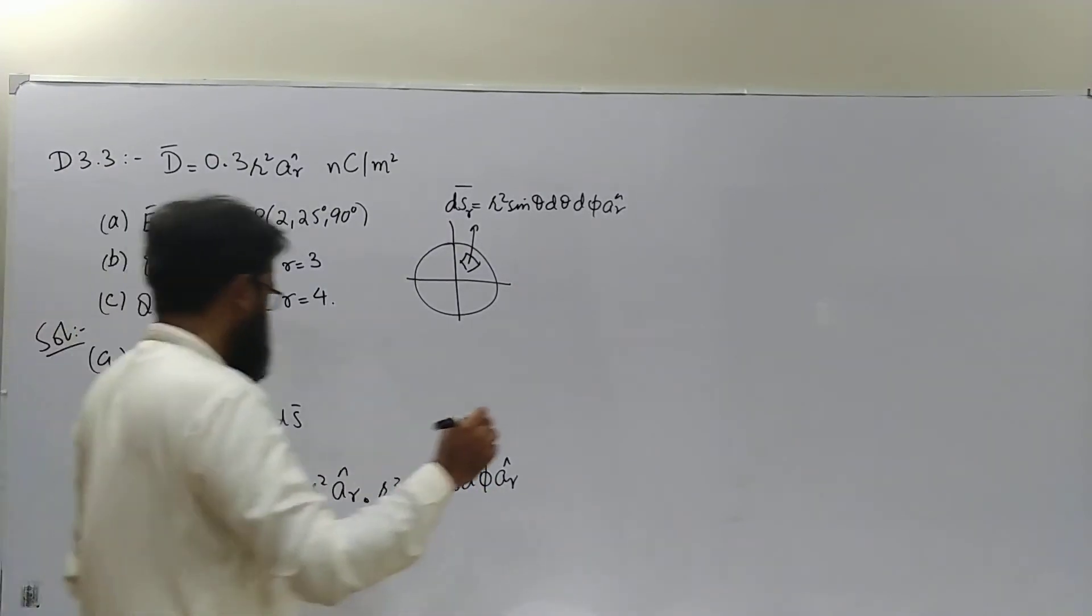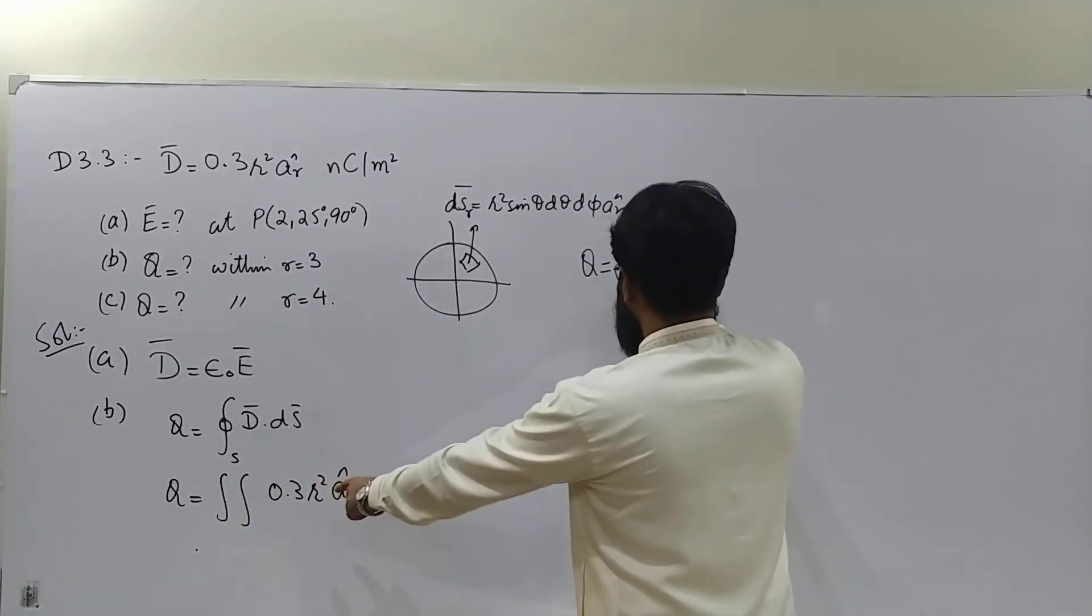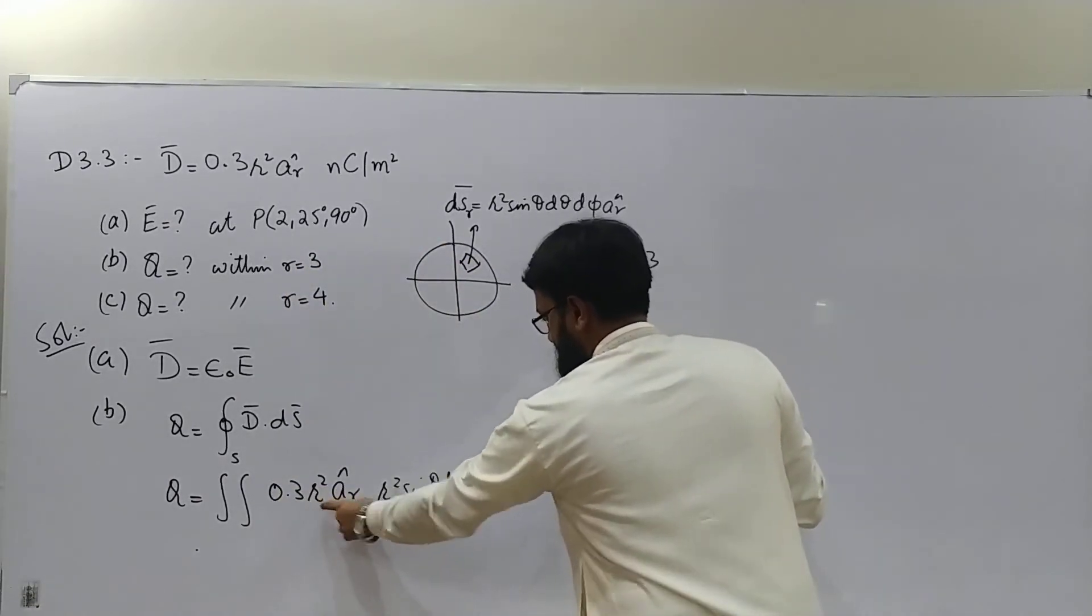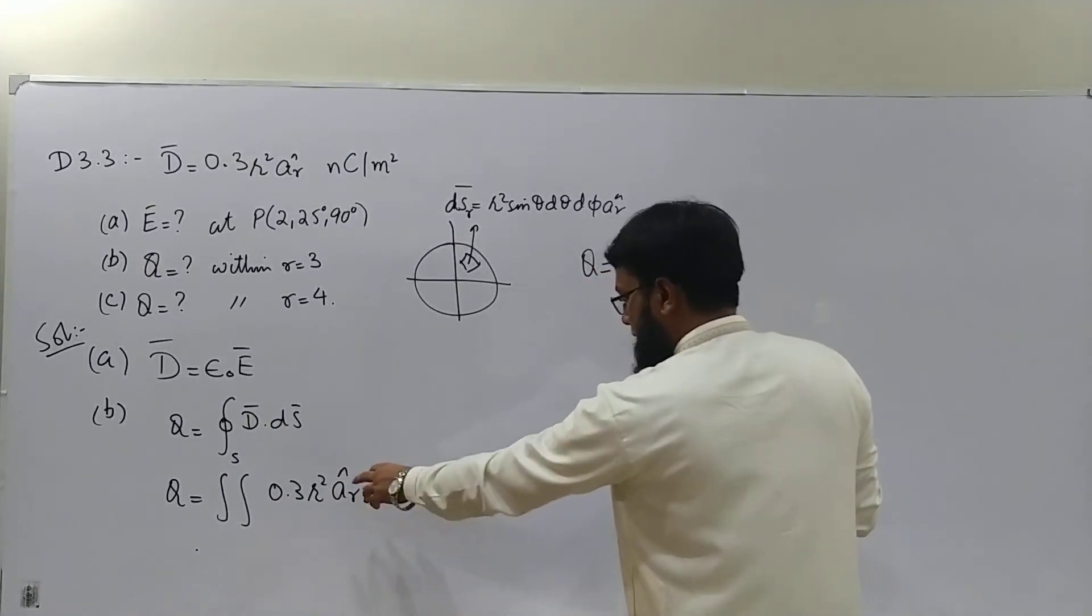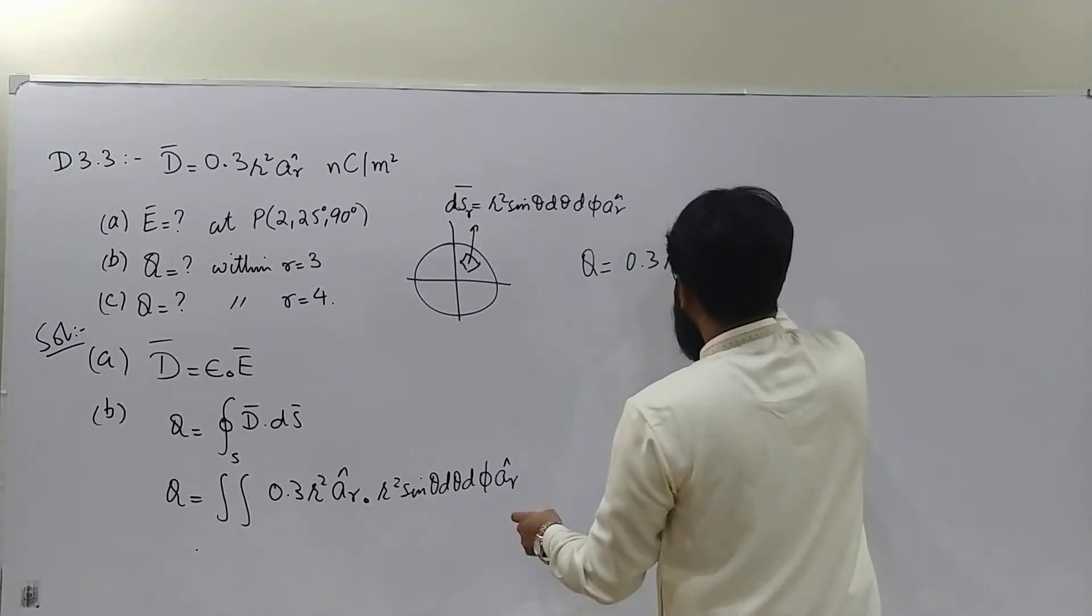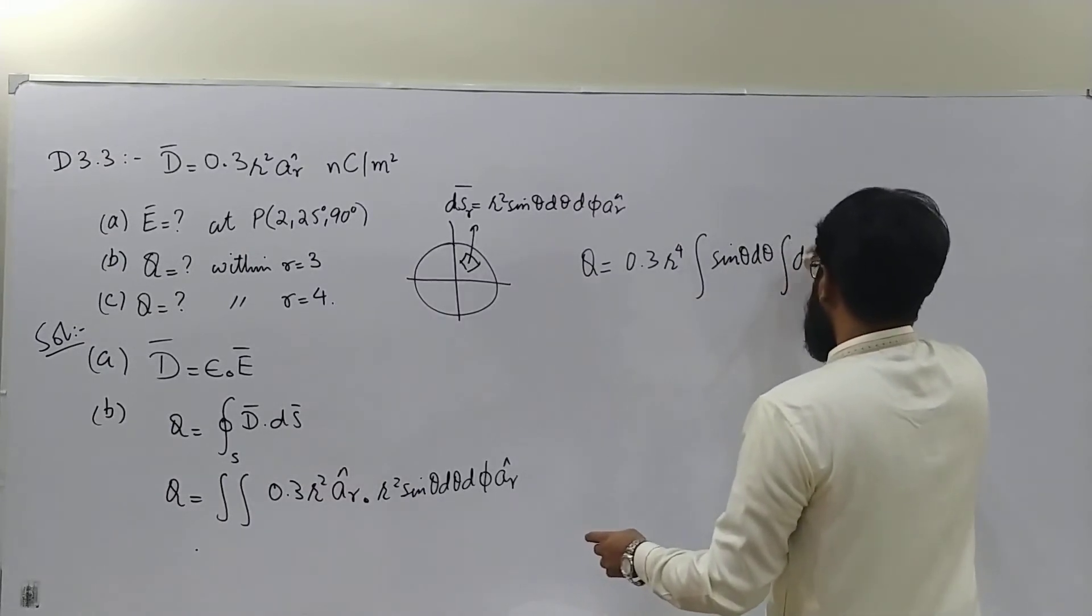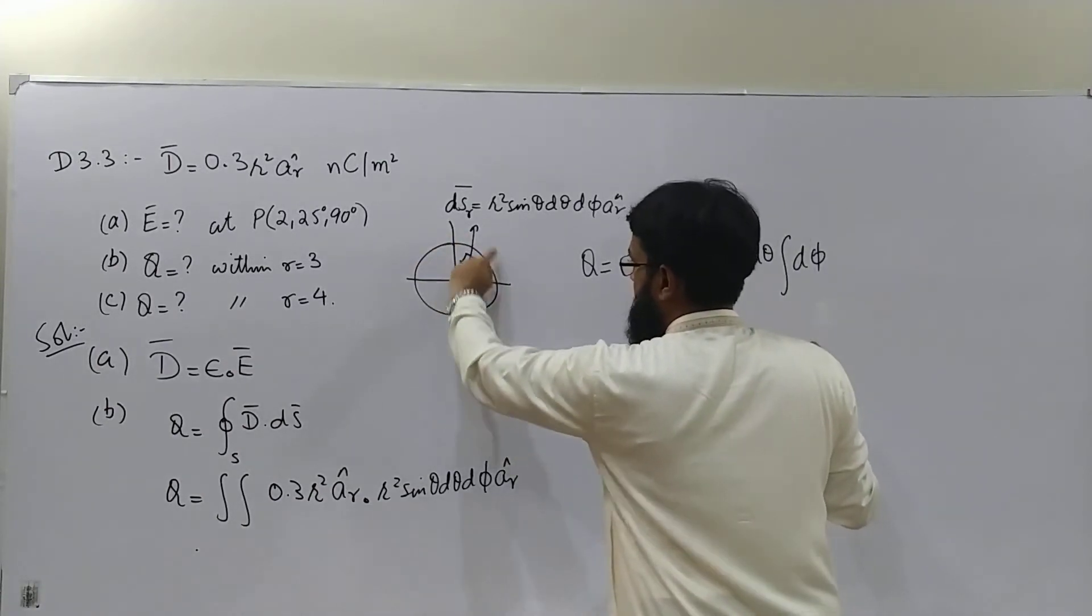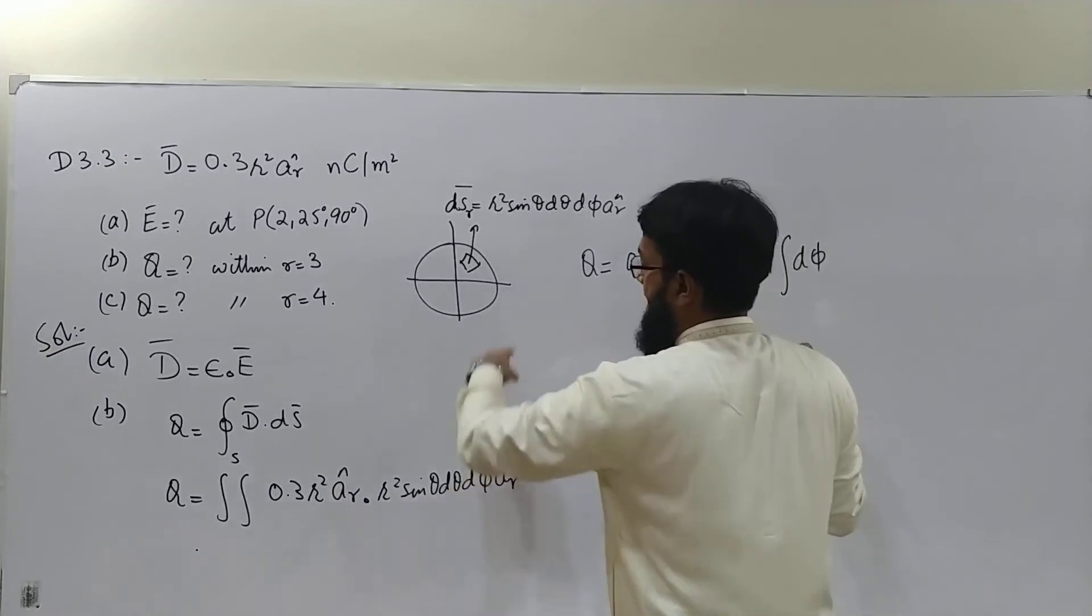Only the magnitude would remain. Keeping the constants out, Q equals 0.3. For R equals 3 sphere, R is constant, so R square times R square gives R to the 4, and then we have sine theta D theta D phi. Double integral, first with respect to theta and then with respect to phi.